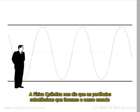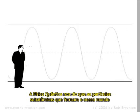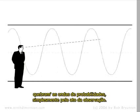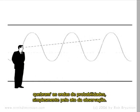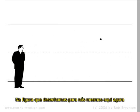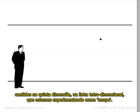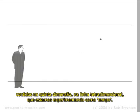Quantum physics tells us that the subatomic particles that make up our world are collapsed from waves of probability simply by the act of observation. In the picture we are drawing for ourselves here, we can now start to see how each of us are collapsing the indeterminate wave of probable futures contained in the fifth dimension into the fourth dimensional line that we are experiencing as time.